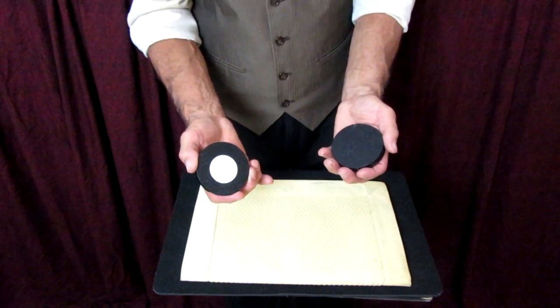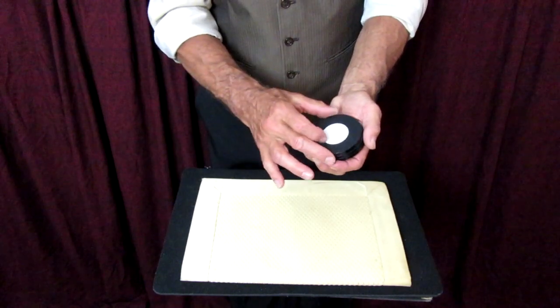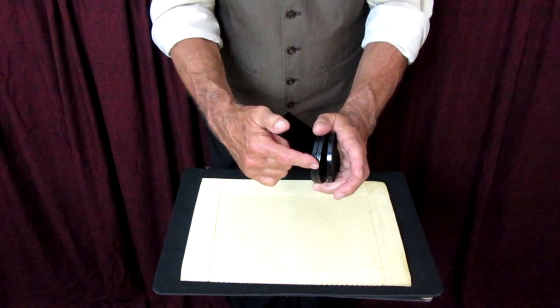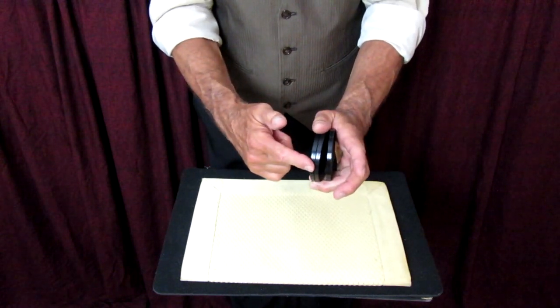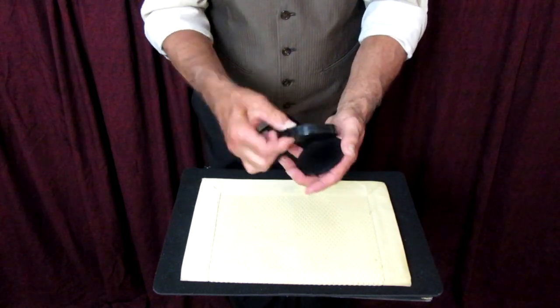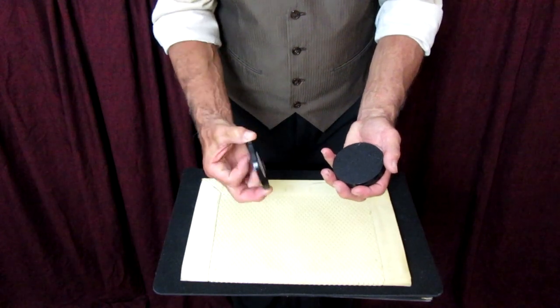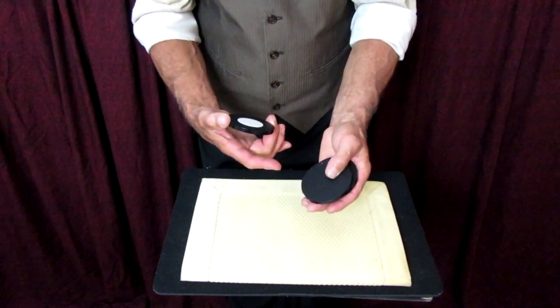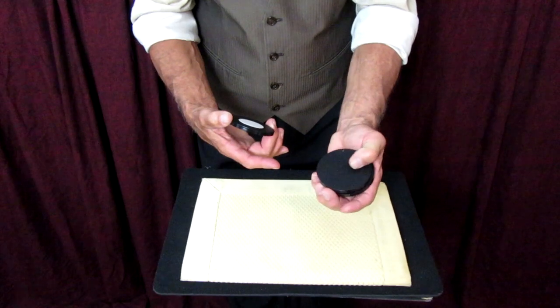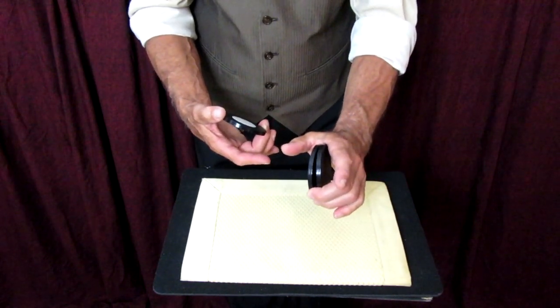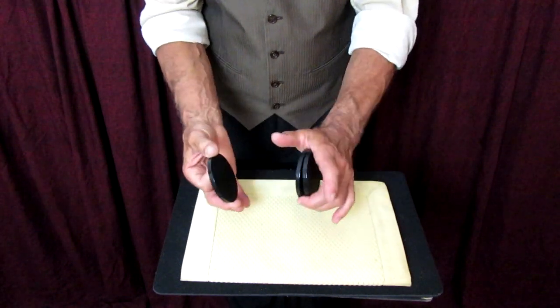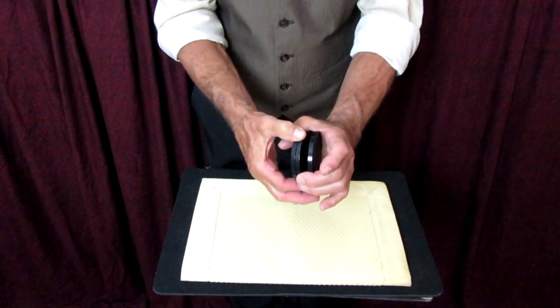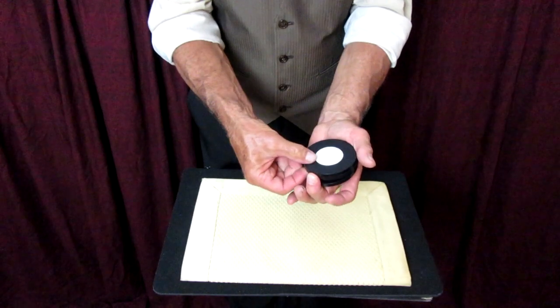Now you have a couple of options here to get your double. You're going to need, in order to get your double, you're going to want a break between the winning disc, the top disc and the second disc so you can turn them over as a unit. If you like, while you're revolving and displaying this disc, you can shove the top disc with your thumb forward, get a break with your middle and ring finger and hold the break with the two fingers and then put the winning disc on top. You now have a break between the first and the second discs, which you can now grab as a unit.